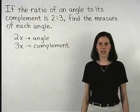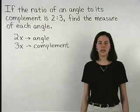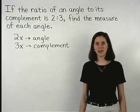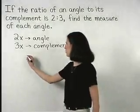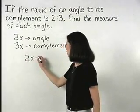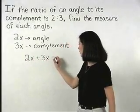Now since we know that an angle and its complement add to 90 degrees, we can set up the equation 2x plus 3x equals 90.